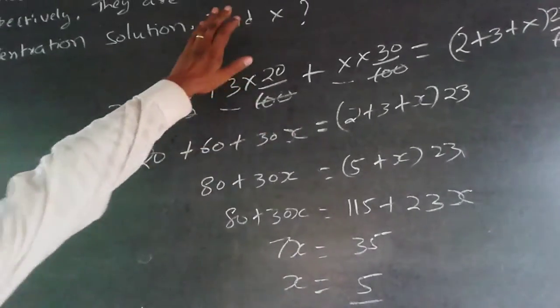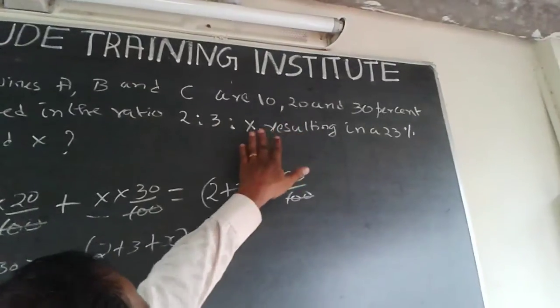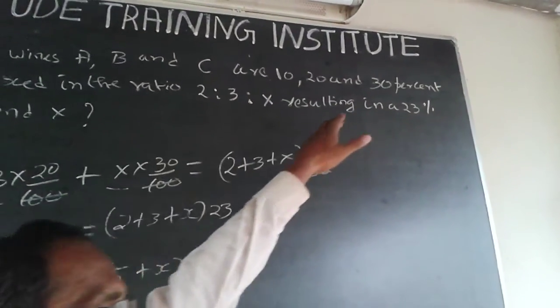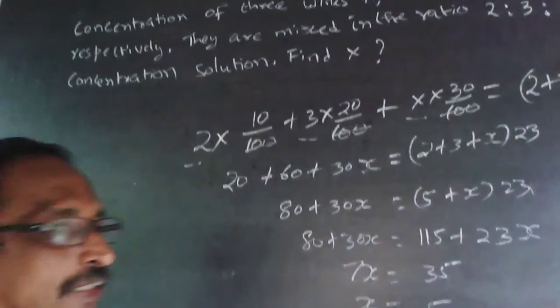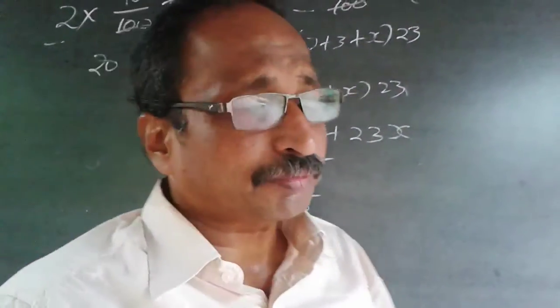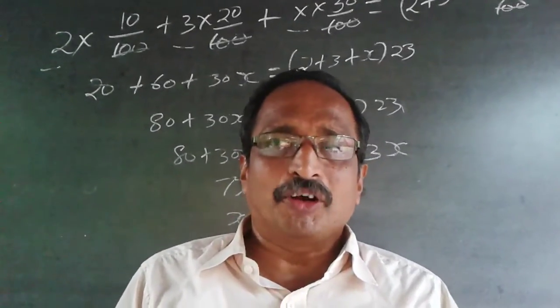So what is happening is taking 2 parts from 10% solution, 3 parts from 20% solution, and 5 parts from 30% solution, resulting in a mixture of 23%. The answer is 5. Follow my channel, I will be adding questions every now and then. Wish you all the best.